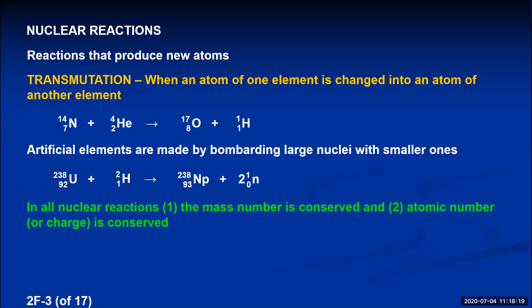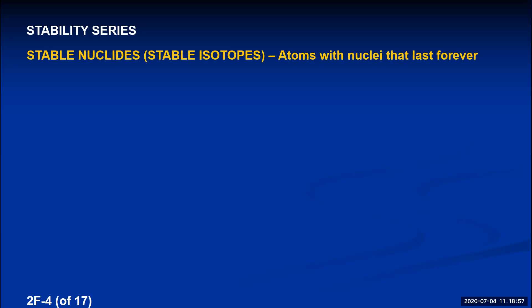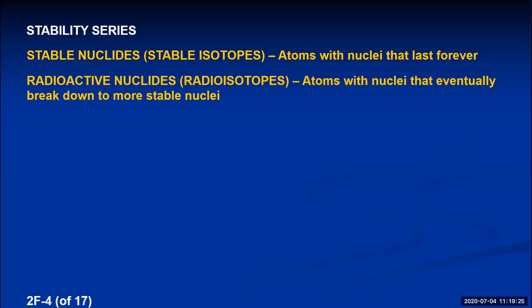There are 92 to 94 naturally occurring elements, and elements with atomic numbers up to 118 exist, each with isotopes having the same number of protons but different neutrons. Some of those isotopes are stable and some are not. Stable nuclides are atoms whose nuclei will last forever — they do not decompose. Unstable atoms spontaneously decompose into something more stable; we call those radioactive nuclides or radioisotopes.